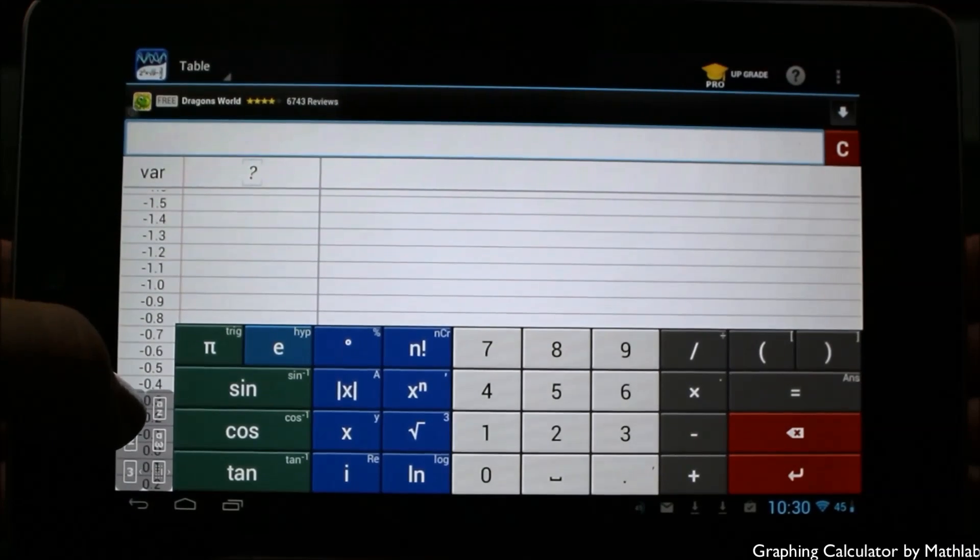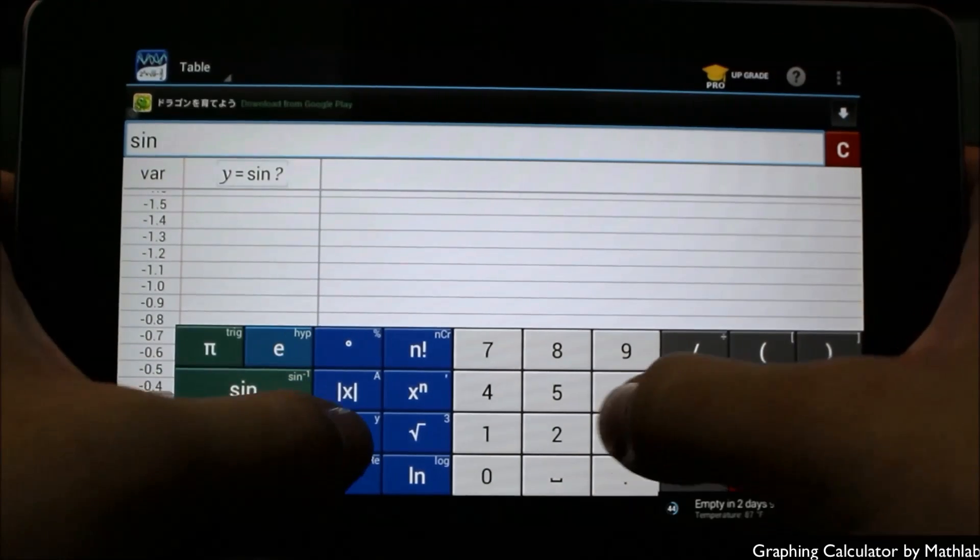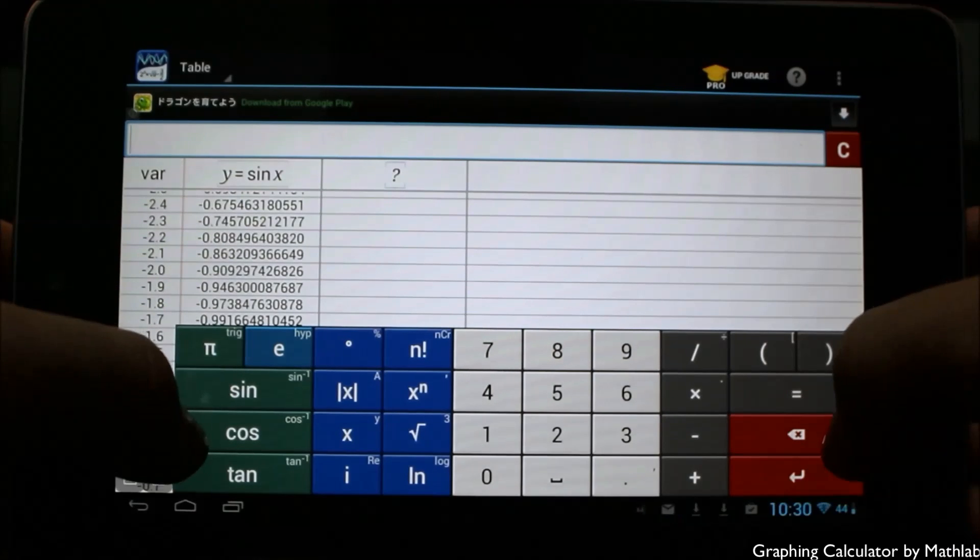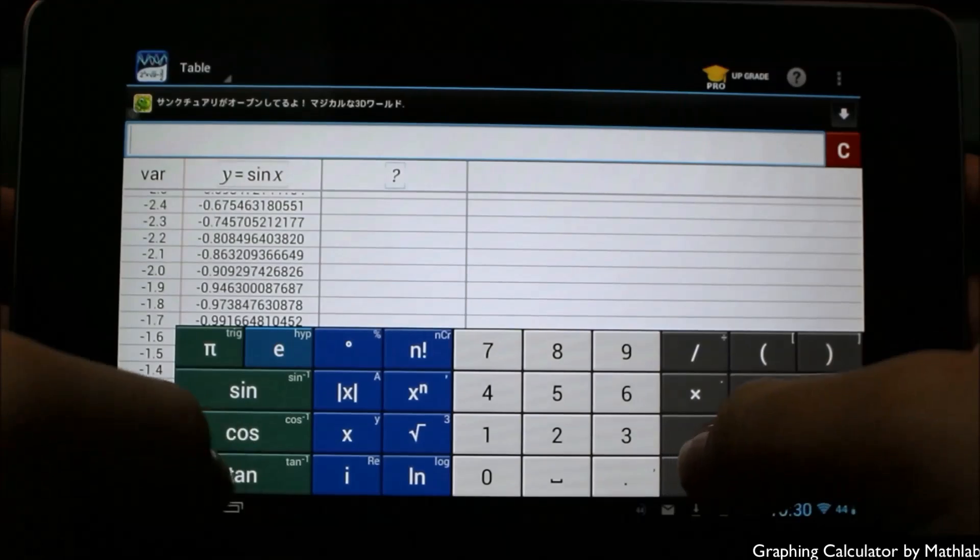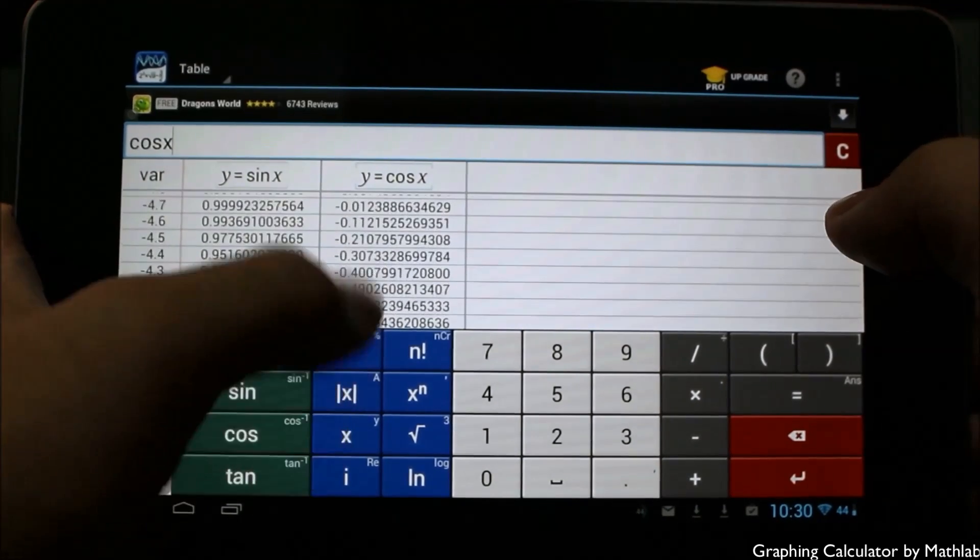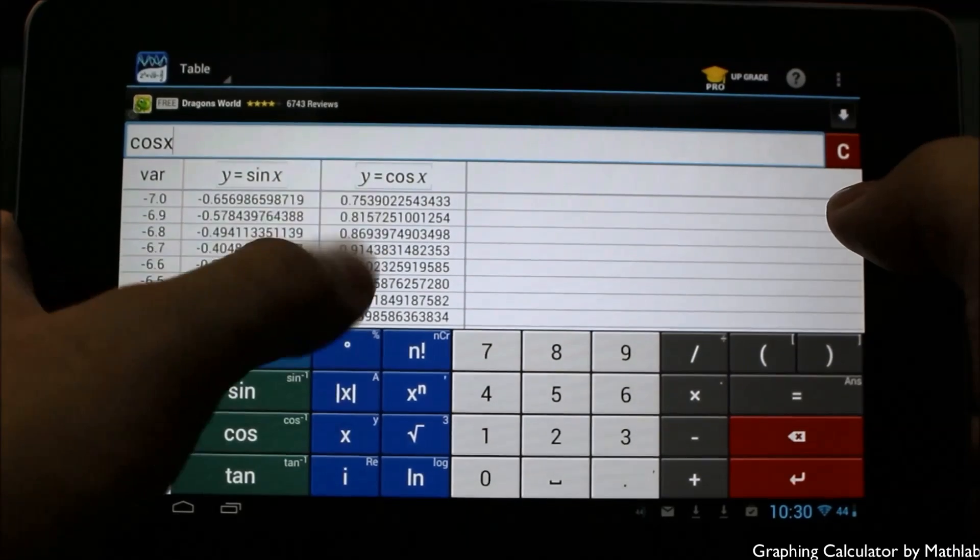Here we are in table mode, so we can of course just put out, for example, sine x. You can see it'll generate the columns here. I can jump over to the next row over here and we'll go ahead and type in cosine x, and it'll generate those columns as well there.